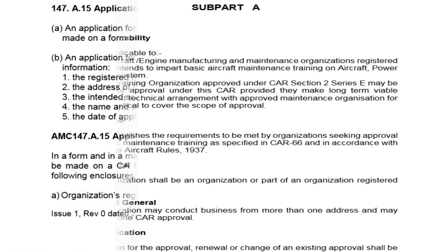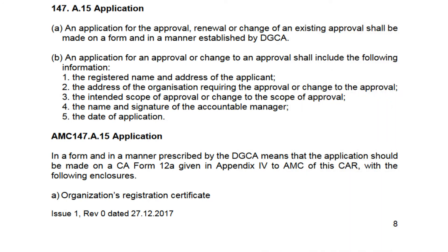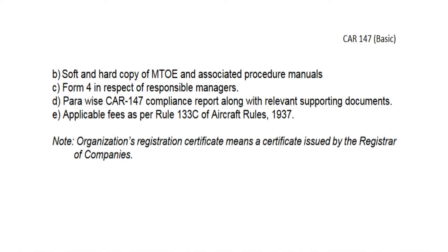So do not get confused with this new word. The next important thing is Application. Application for approval will be submitted on CA Form 12A, along with the organization's registration certificate, MTOE or associated procedure manuals in soft and hard copy, Form 4 for responsible managers, para-wise compliance with CAR 147, and fees as per Rule 133C. The organization's approval will be as per Rule 133B.